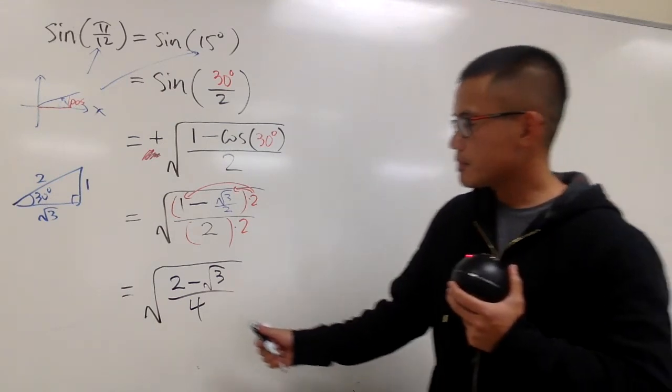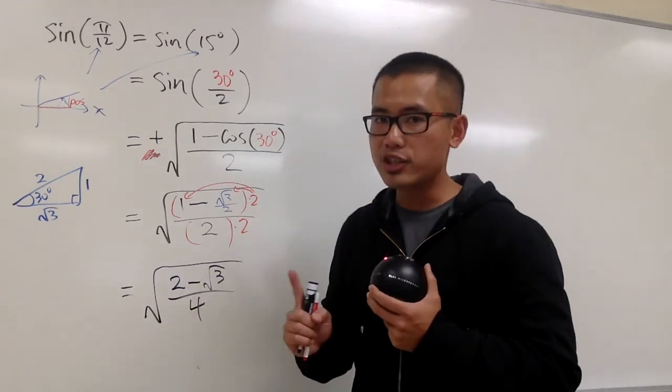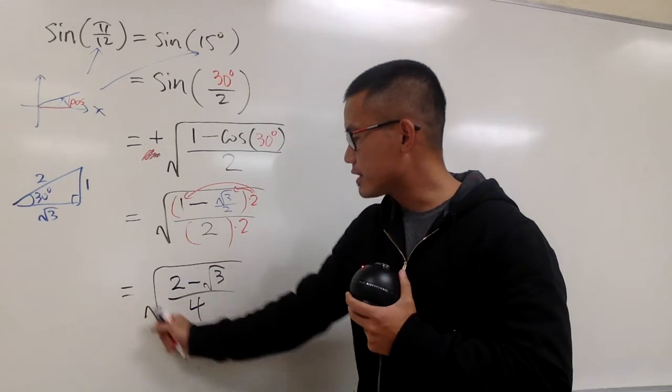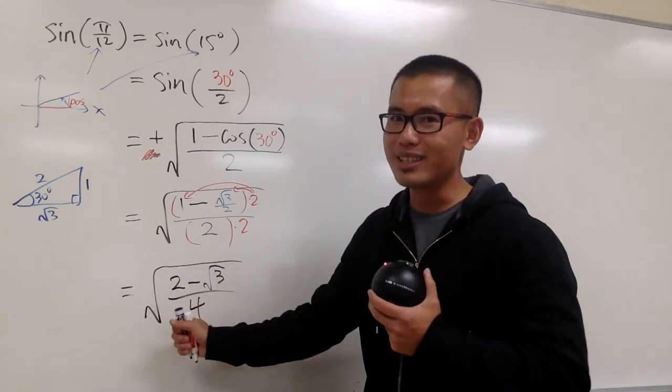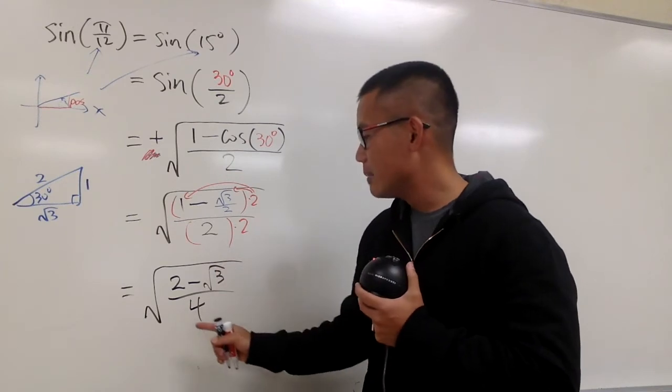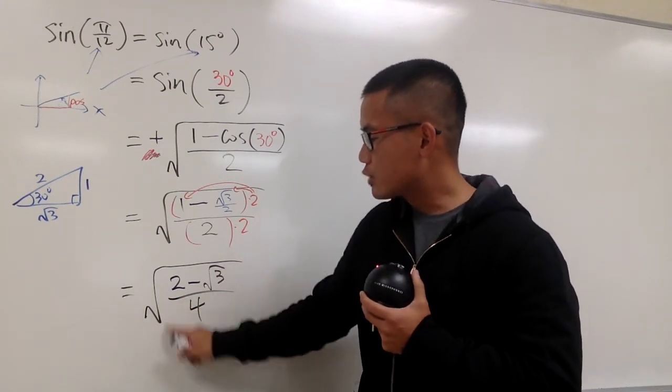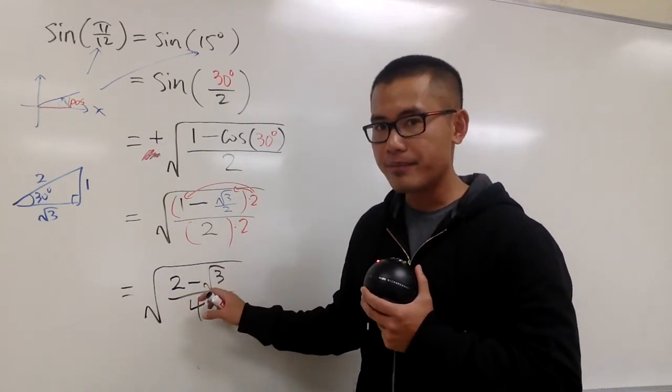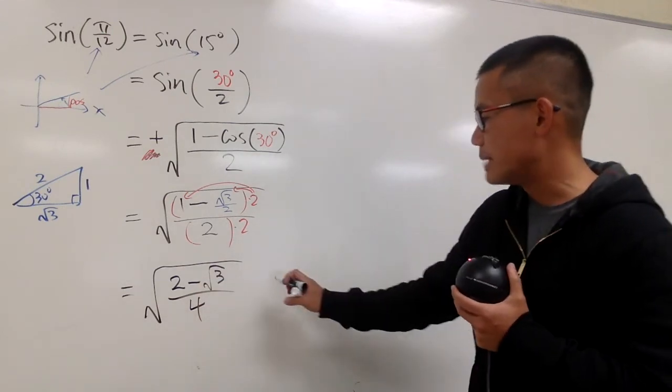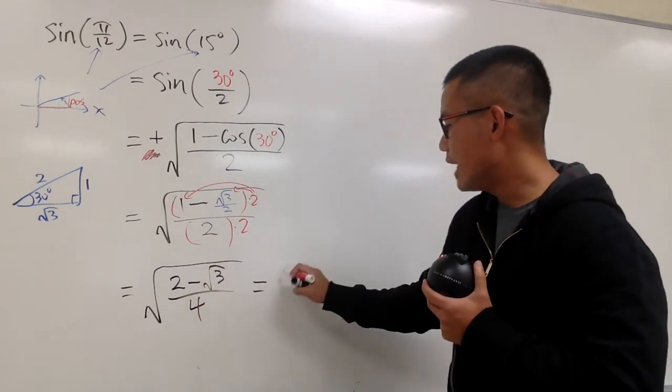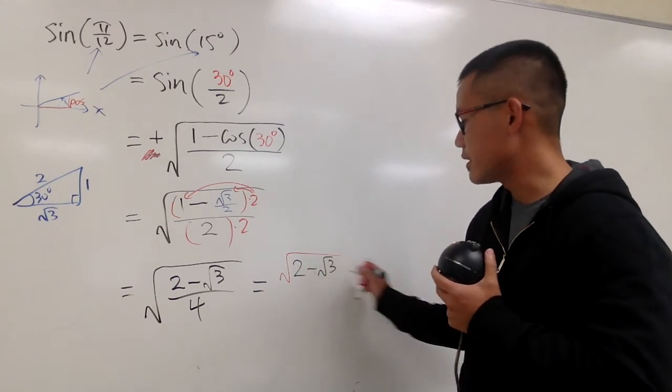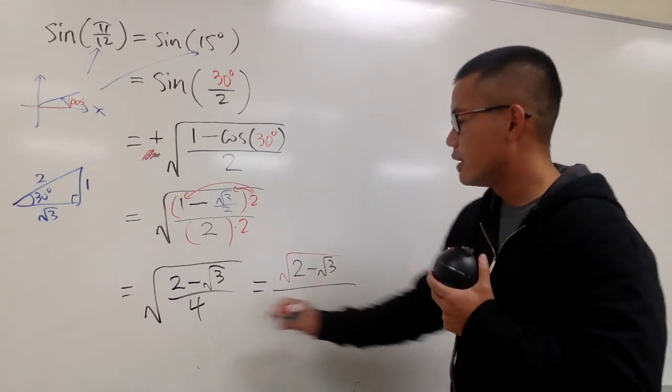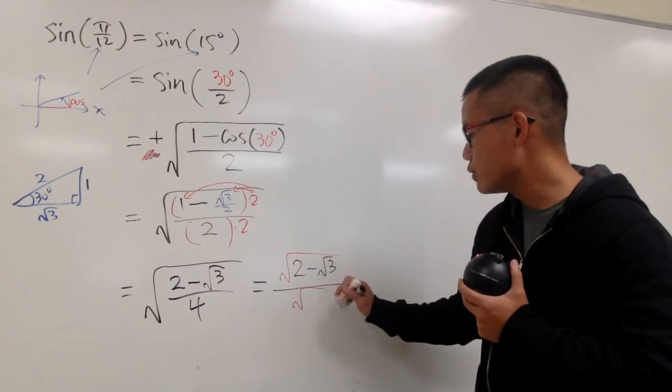And now, you can see this is just one fraction inside of a big square root. I know we have a small square root inside of a square root, but this is okay. But anyway, when you have a big square root and then you have a fraction inside, this means, I will show you all the steps in this case, it means we have to do square root of the top, which is 2 minus square root of 3, and then over square root of the bottom, which is square root of 4.